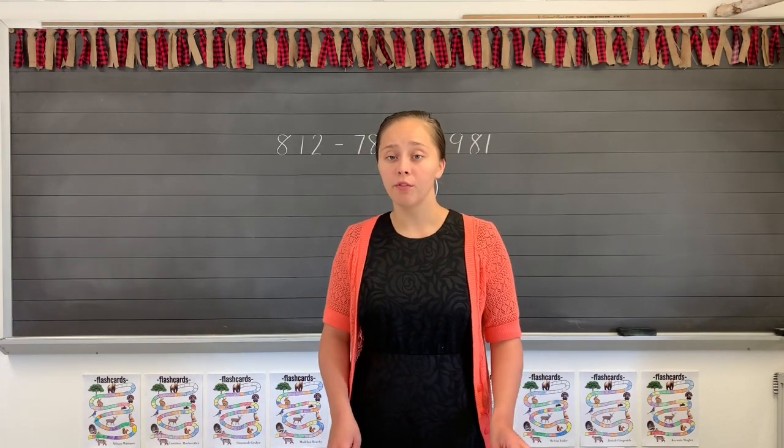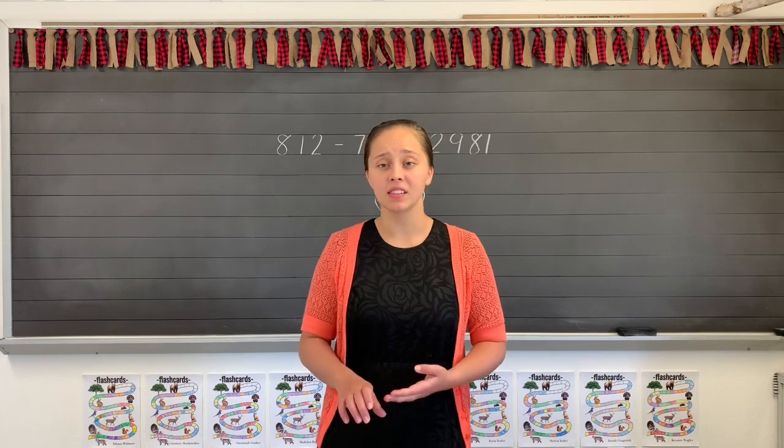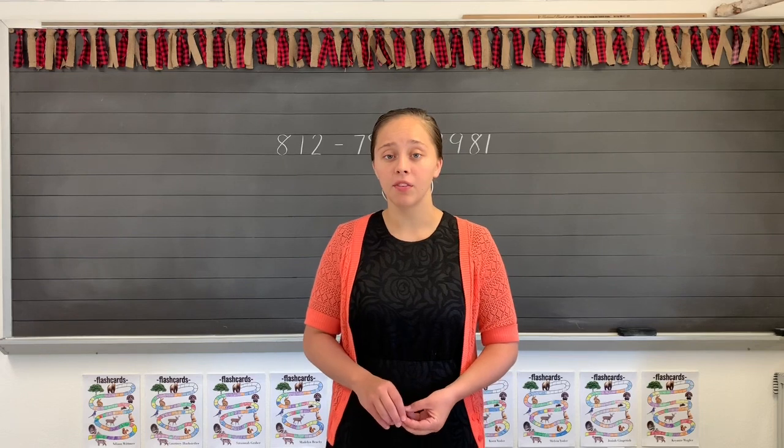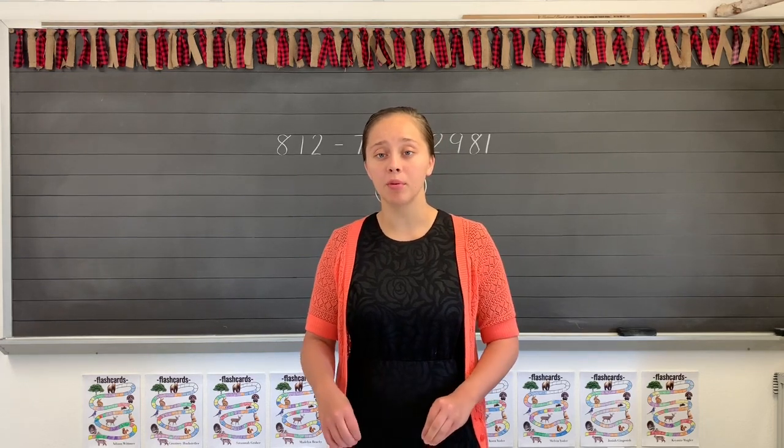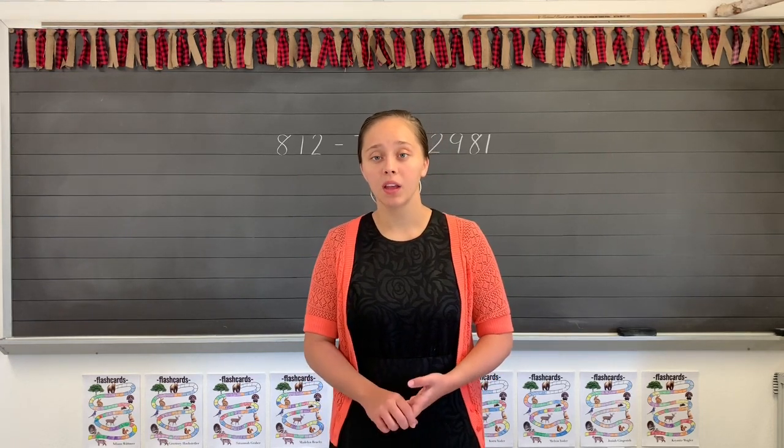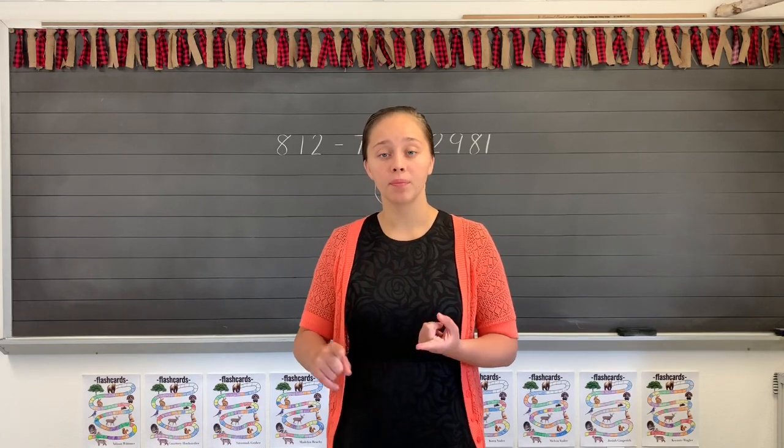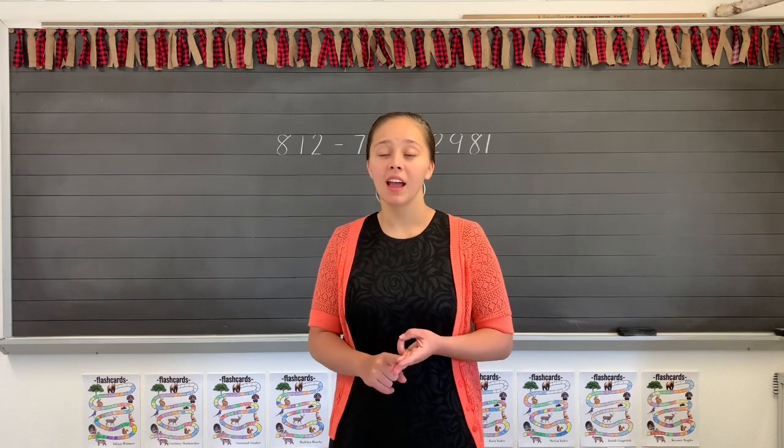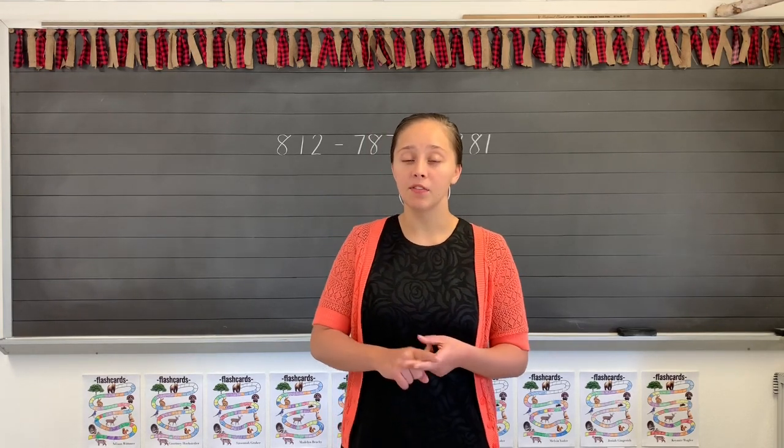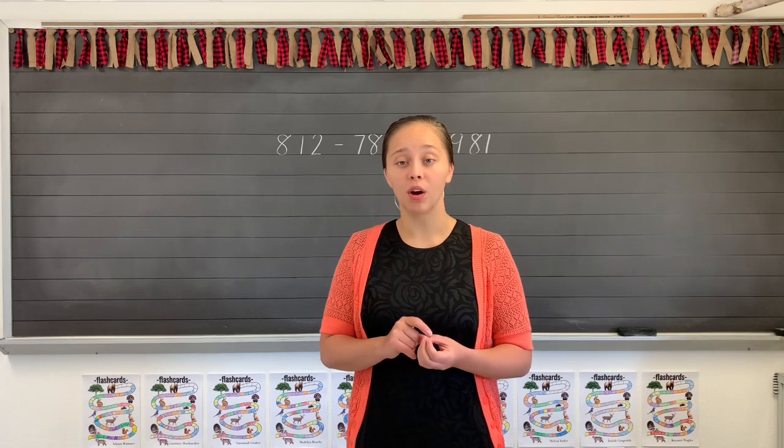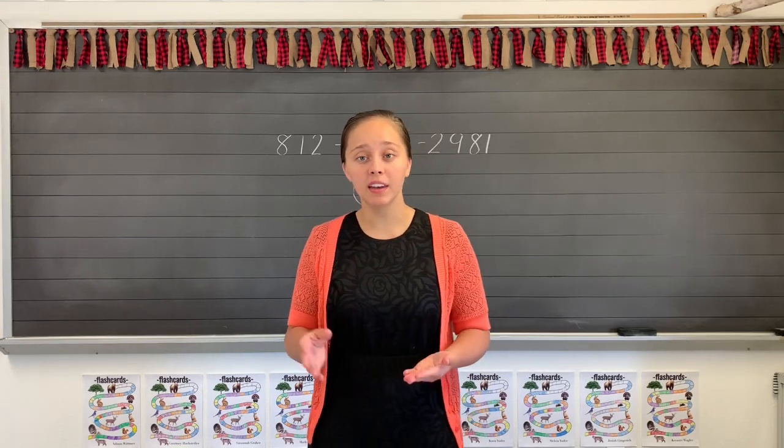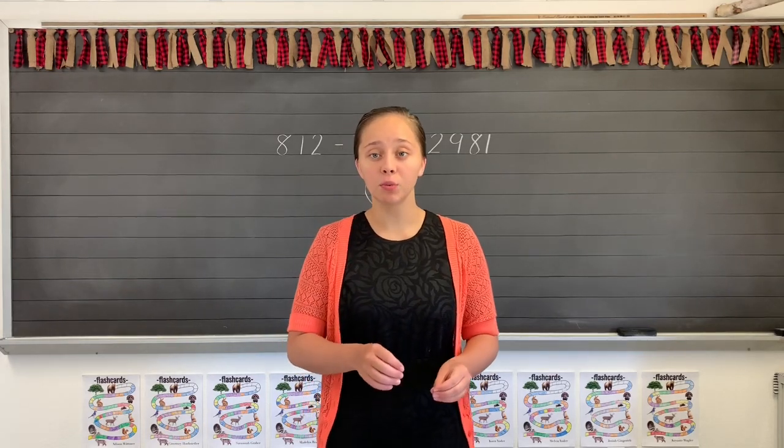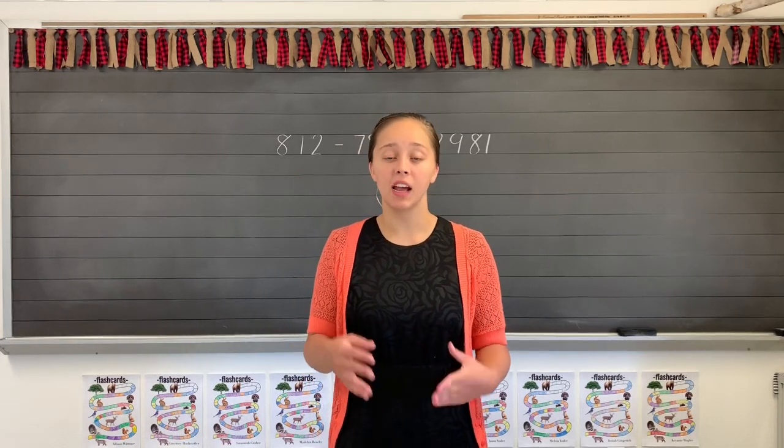What is the rule for doubling the last consonant? If I wanted to add a suffix, what are the three questions that we ask ourselves? First of all, does it have a short vowel? Does it end in only one consonant? And are we adding a vowel suffix? If you say yes to all three of those, you double the ending consonant and add the suffix. If you say no to one of those, you simply just add the suffix.